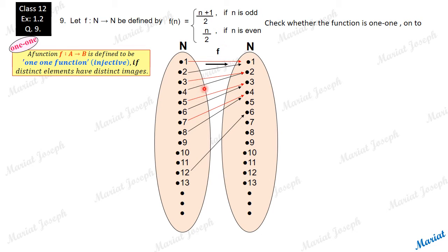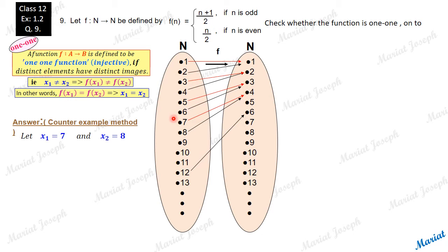Now we need to check whether this function is one-to-one. What is a one-to-one function? A function from set A to set B is called a one-to-one function if distinct elements have distinct images. That means if you take two distinct elements here, the image should be distinct, unequal. Look at numbers 7 and 8.